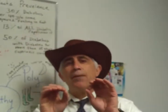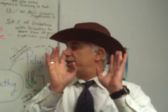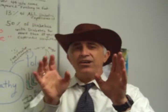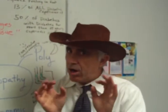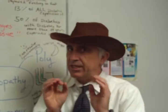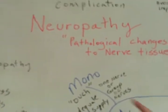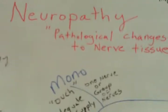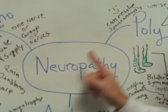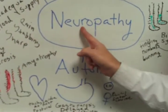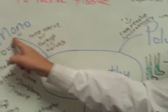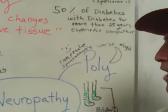We classify neuropathies in three categories, at least for our discussion according to our textbook. What are these three categories? Mononeuropathy, polyneuropathy, and autonomic neuropathy.